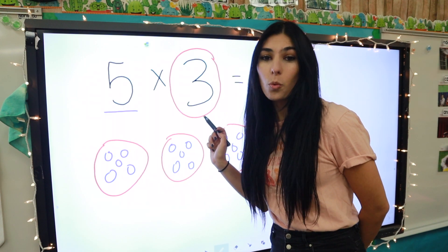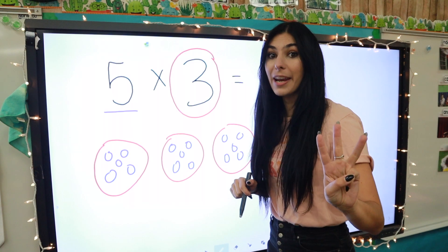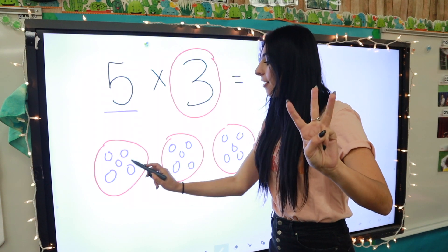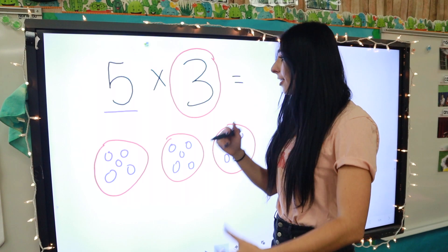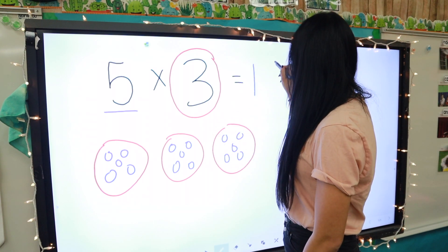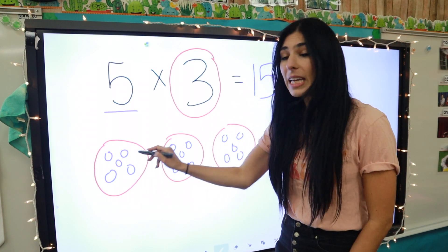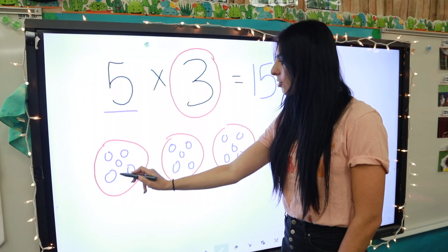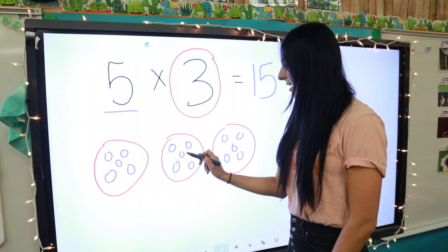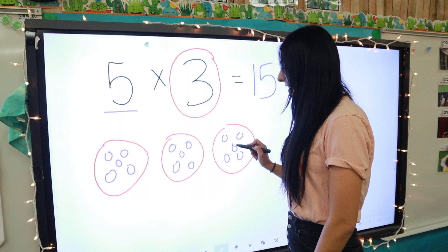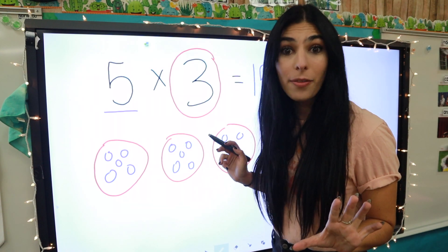Since we're doing multiplication, all the little circles together are our big number. Do we know how to count by fives? There are five in each circle, so we're just counting by fives three times - five, ten, fifteen. Our answer is fifteen. You can double-check by counting each of those little dots: one through fifteen.